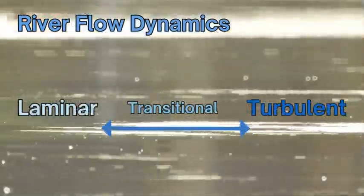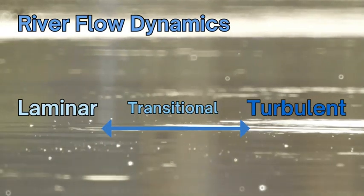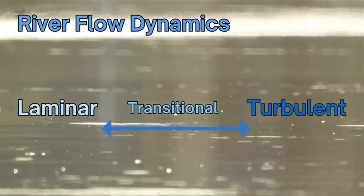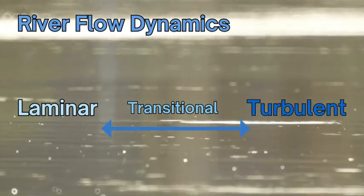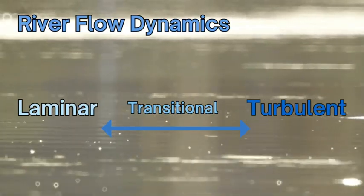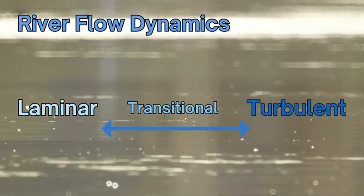There are two main types of flow by the water in the river. There's laminar and turbulent, and in between that is a flow called transitional.